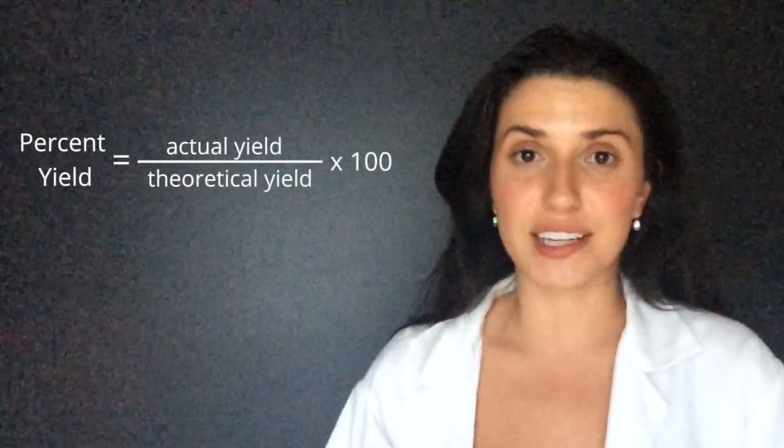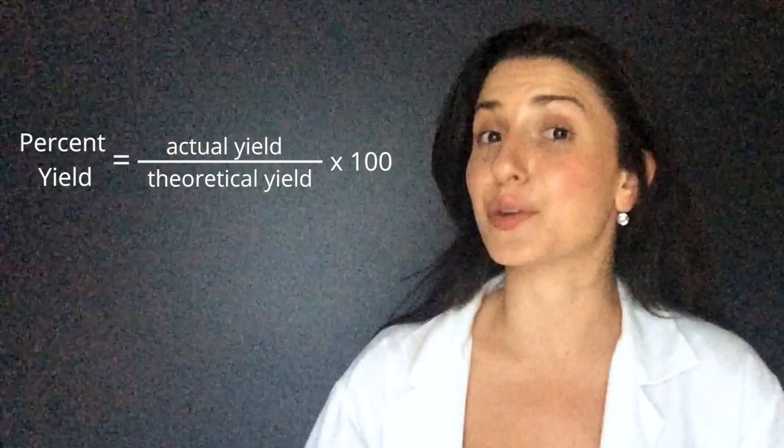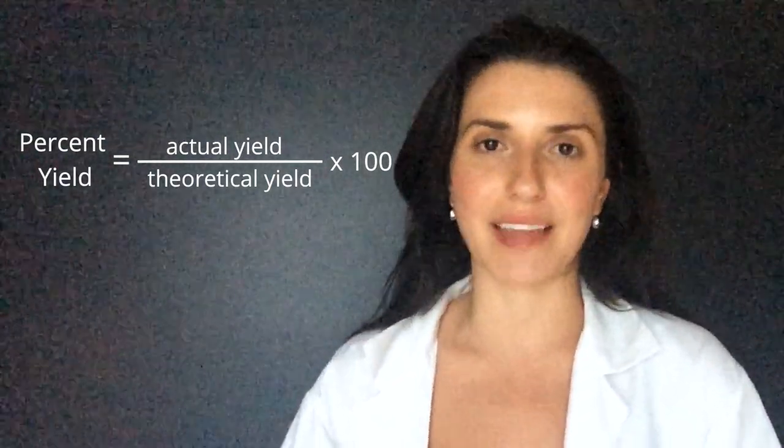Percent yield is calculated by dividing the actual yield by the theoretical yield and then multiplying that by 100.